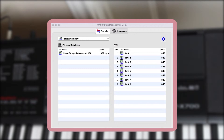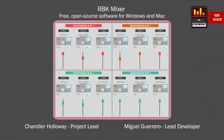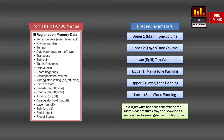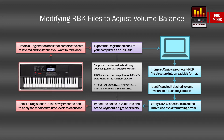Now, full disclosure, these aren't just regular RBK files. These files were specially modified to apply custom volume levels using my free software utility RBK Mixer. According to the manual, there are all the settings that you can store in a registration, but it's not a complete list. In reality, registration files contain additional parameters — like the volume level of the layered and split tones — that aren't accessible through the onboard controls. However, if you have an RBK file on your computer, you can modify these hidden parameters through software editing and then apply those changes when you recall the registration on your keyboard. That's where RBK Mixer comes in.